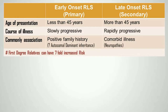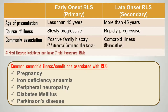Secondary RLS can be associated with multiple physiological states or comorbid medical illnesses. Common associated conditions include pregnancy, iron deficiency anemia, peripheral neuropathy, diabetes mellitus, Parkinson's disease, and many more conditions. Do have a look at the BRAIN eCourse material for a detailed list of conditions associated with RLS.